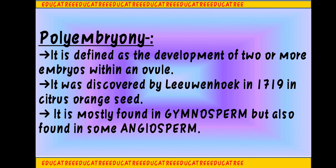What is Polyembryony? How will you define this term? As I have told you before, in Biology, when we split any term, we understand its sense. So this word Polyembryony is made up of two words: first is 'poly', which means more than one, and 'embryony' means embryos. So when the formation of more than one embryo occurs within a single ovule, that process is called Polyembryony. Polyembryony is a process in which development of two or more embryos occurs within an ovule.